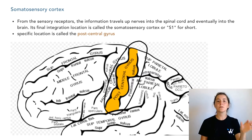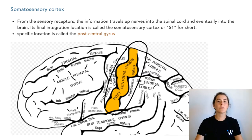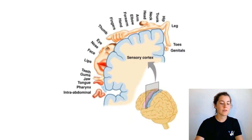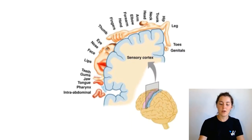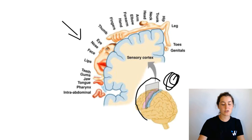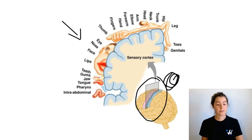If we take this post-central gyrus, cut on either side of it and turn it sideways, we're able to see something pretty cool. This is an image of what I was just talking about. Over here we have the outside of the brain, this would be the inner side of the brain, and this picture gives you an idea of where we're slicing — right on the post-central gyrus.